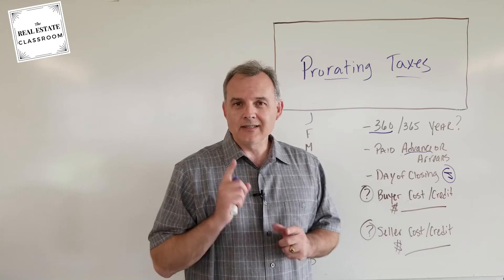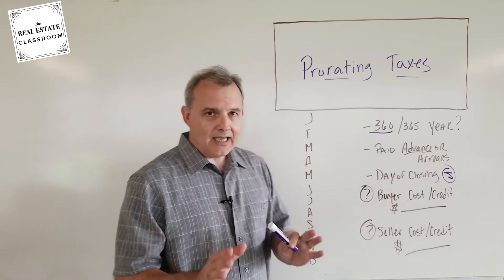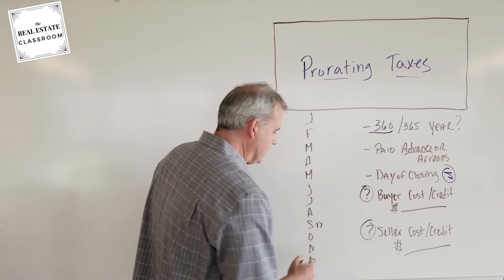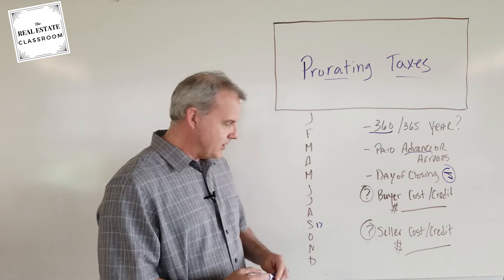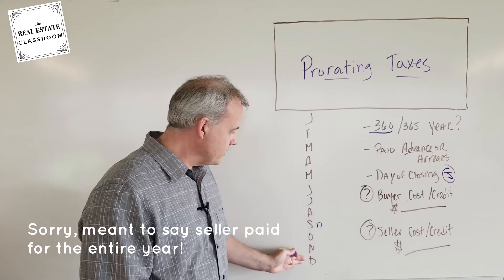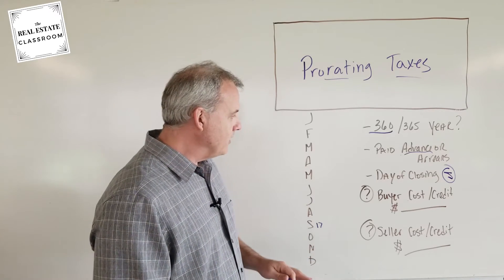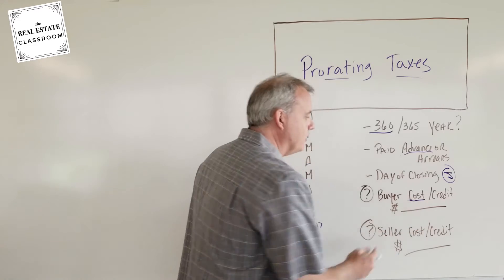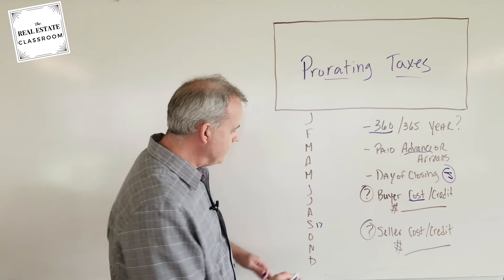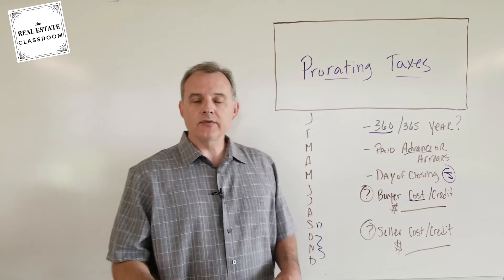So let's get to today's video. We know automatically that it's a 360-day process for calculation. We also know that the 17th is the closing, the 17th of September. We also know that the seller has paid the entire month through December 31st. So that tells us right away, based on the information that we have, that the buyer is going to have to, that's going to be a cost or a debit to the buyer, because the buyer is going to have to reimburse the seller